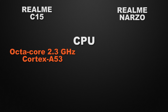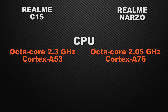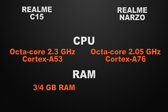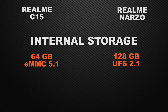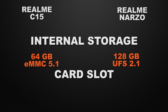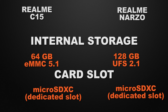For clock speed, the Realme C15 clocks at 2.3GHz on an octa-core processor and the Narzo clocks at 2.05GHz on an octa-core chipset, so the C15 wins on clock speed. For RAM, the C15 offers 3GB and 4GB options while the Narzo has 4GB — the winner is Realme Narzo due to lower latency. For internal storage, the C15 has 64GB and Narzo has 128GB, so Narzo wins. Both devices support a dedicated microSDXC card slot, so it's a tie.